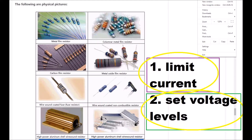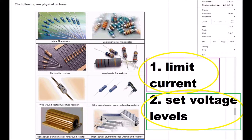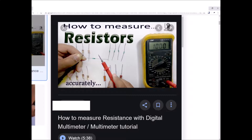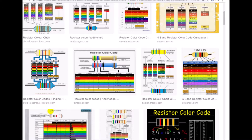Resistors perform two basic functions: to limit current flow and to set voltage levels within a circuit. Limiting current flow actually has a technical term — that's called attenuation. To measure a resistor, take your multimeter, set it to DC resistance, and you can measure the value that way. Or you could look at the color bands written on the resistor. You can also Google the color band and have an instantaneous resistor value pop up, so you don't really need to know color coding for resistors — I think that's becoming an old approach.